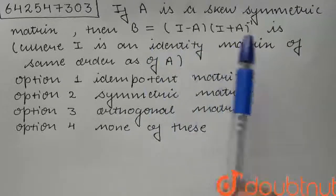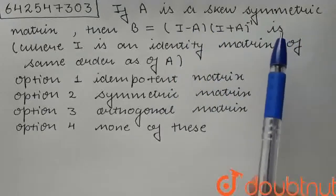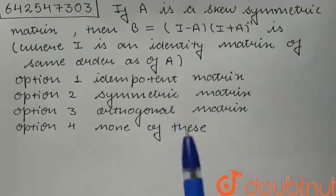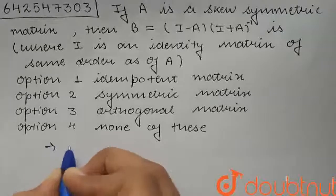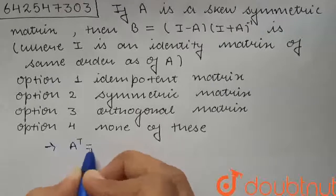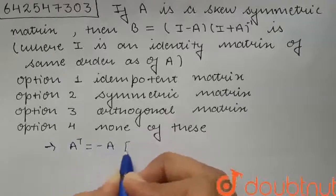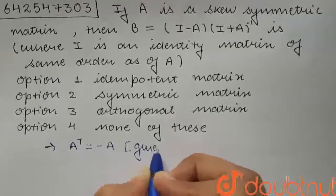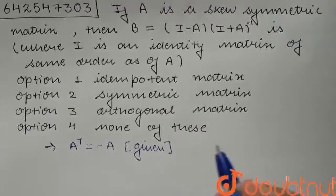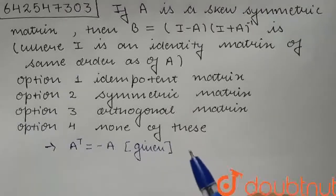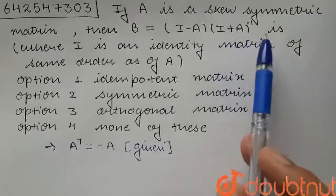So we are given that A is skew symmetric. If A is skew symmetric, then it is obvious that A transpose is equal to negative of A. Also, we are given that B is equal to (I minus A) into (I plus A) inverse.